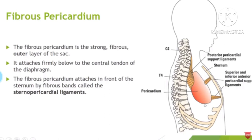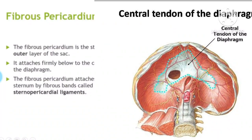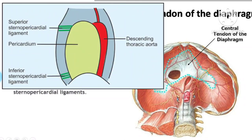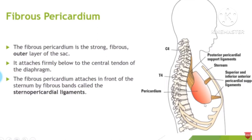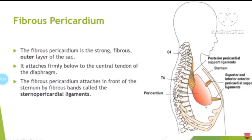Regarding its attachments: inferiorly, the fibrous pericardium is attached to the central tendon of the diaphragm. Anteriorly, it is attached to the sternum via ligaments called the superior and inferior sternopericardial ligaments, which you can see in the diagram. That is all about the fibrous pericardium.